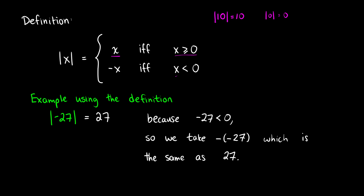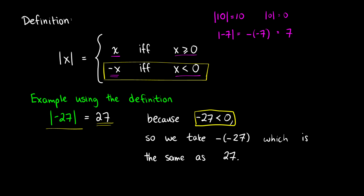But if x is less than zero — so if we have something like negative seven — then what we do is we take that number and output negative x as the absolute value. So if we have the absolute value of negative seven, we get negative negative seven, which is just the same thing as positive seven. In other words, this definition always gives us a positive outcome. For example, the absolute value of negative 27 is equal to 27. Since negative 27 is less than zero, we use the bottom definition, so the absolute value of negative 27 is negative negative 27. The two negatives cancel out, and we're left with 27 as our solution.